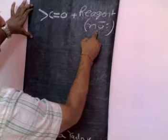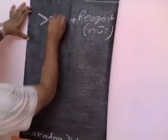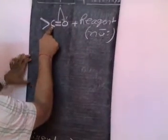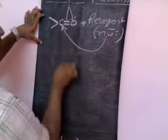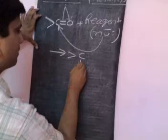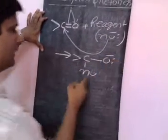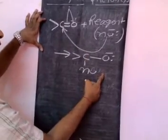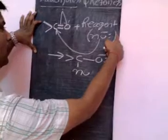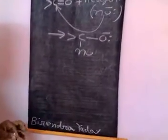In the presence of a nucleophile, the pi electrons of the C=O bond shift toward oxygen, and by this way carbon becomes electron deficient. That's why the nucleophile attacks this carbon and gets attached with it. This is simple addition, and since the attacking reagent is a nucleophile, the overall reaction becomes a nucleophilic addition reaction.